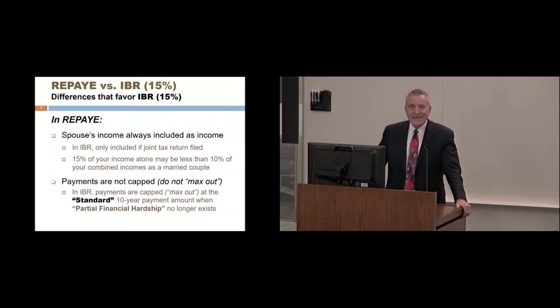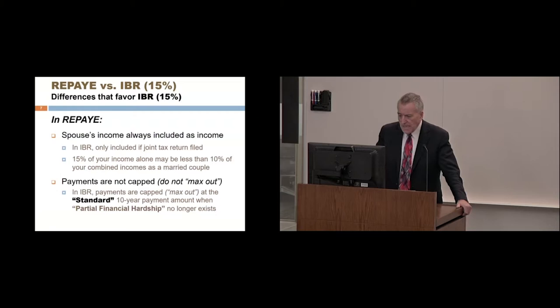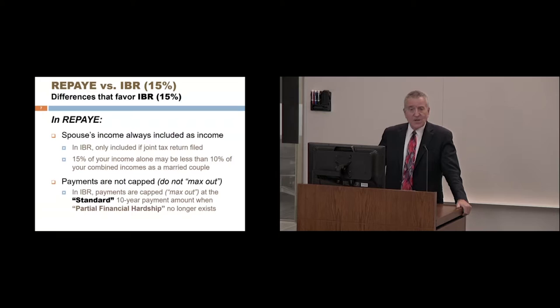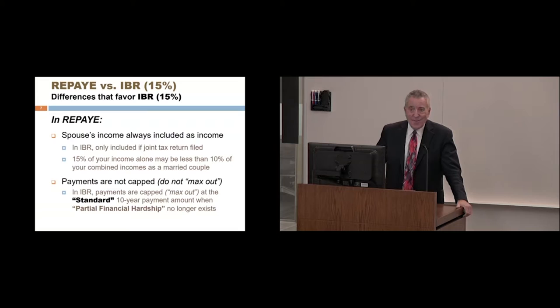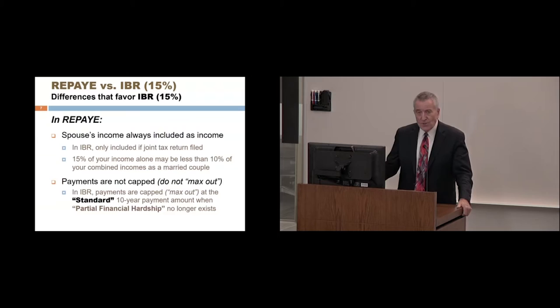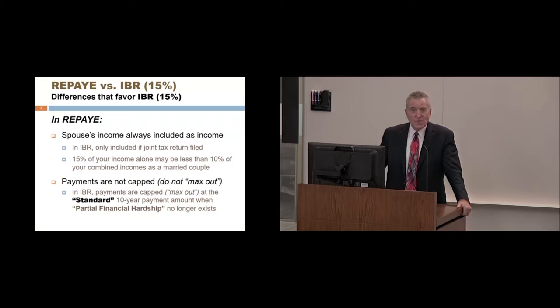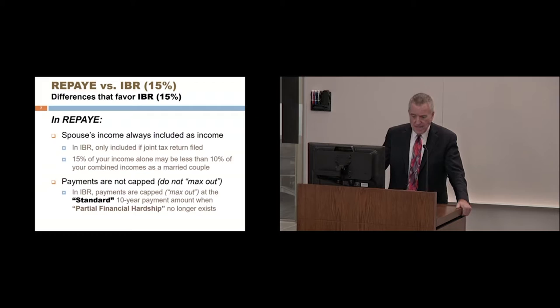In REPAYE, payments are not capped, whereas in IBR — because it requires a partial financial hardship — payments are capped at the standard 10-year payment amount once that hardship no longer exists. So if your income is increasing to the point where your 15% IBR payments would soon max out at the standard 10-year amount, you might want to switch from REPAYE to IBR while you're still experiencing a partial financial hardship. Once your income-based payments would exceed that standard amount, you'd no longer have a partial financial hardship and wouldn't be eligible to switch into IBR.